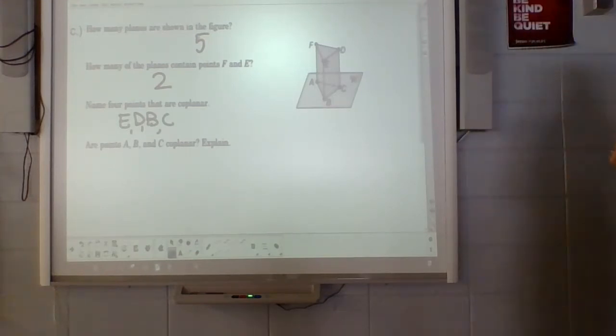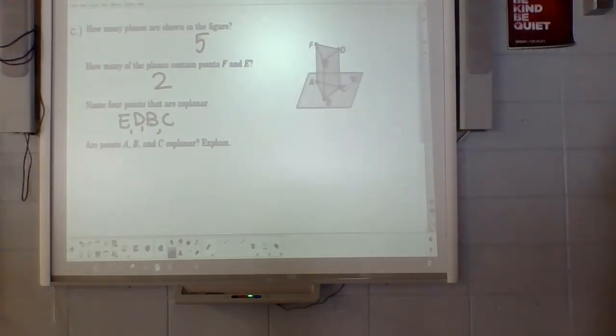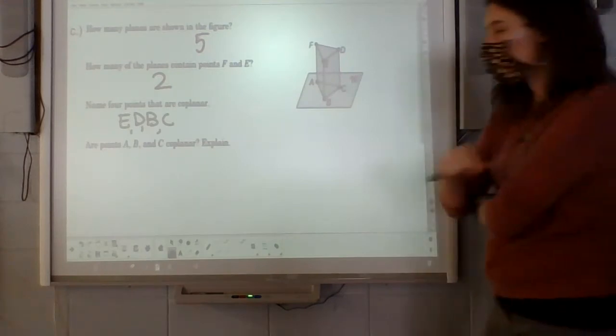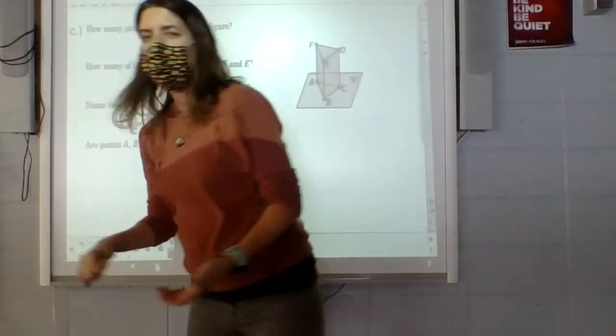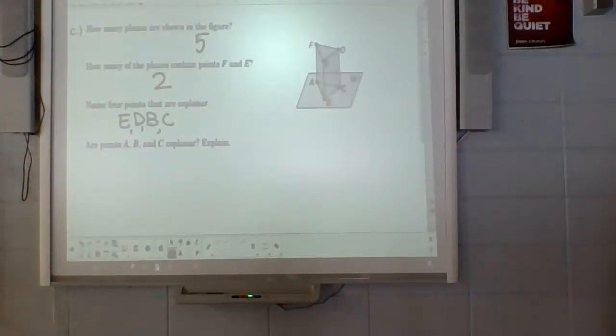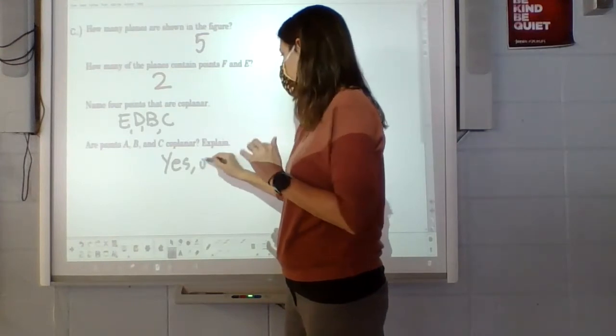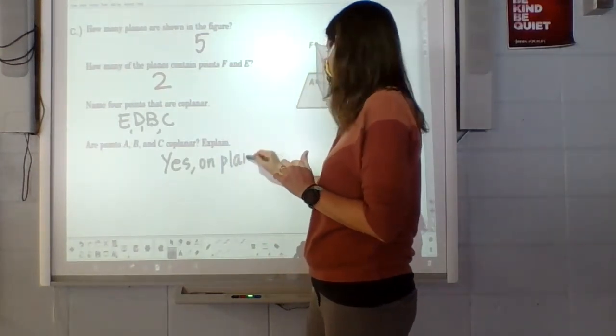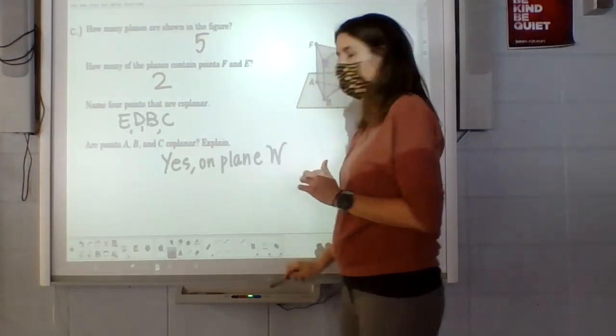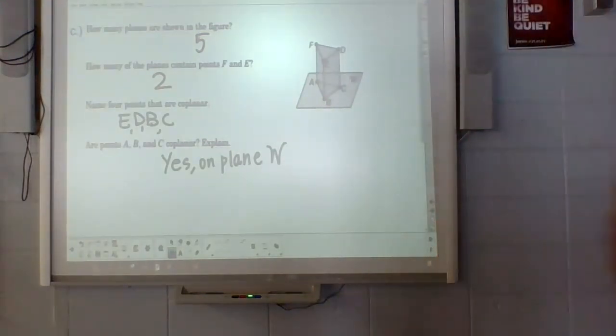And then it asks, are points A, B, and C co-planar? Are they on the same plane? Yeah, they're all sitting on the bottom of that plane, flat on the bottom. So yes. They're all on plane W.